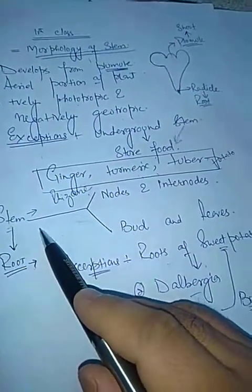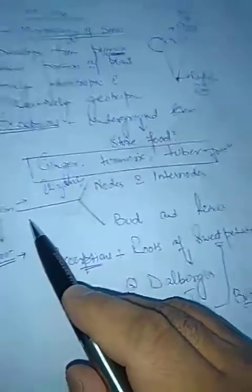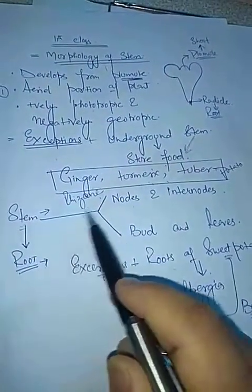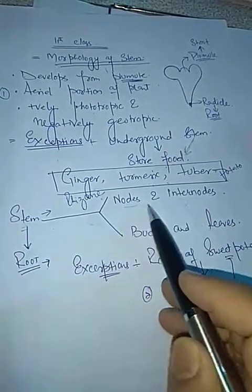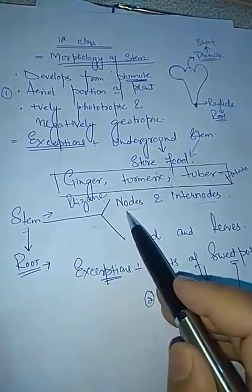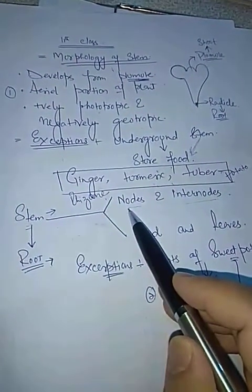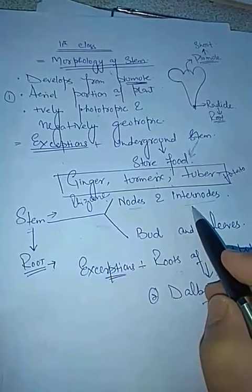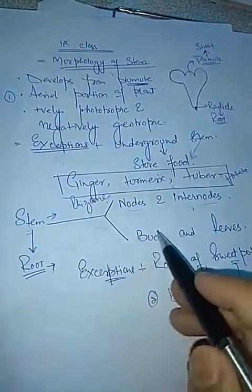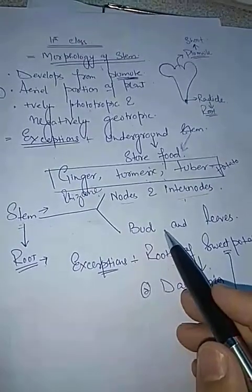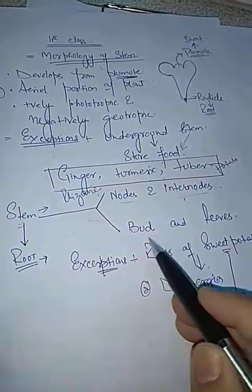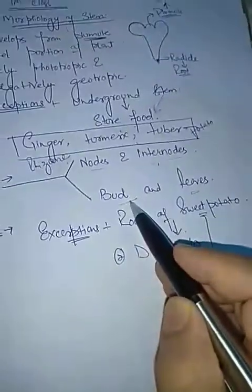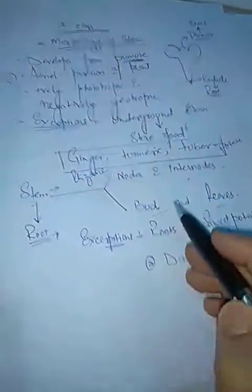As far as the stem is concerned, there are some diagnostic features that differentiate it from the root. The stem has nodes and internodes. The node is the point from which a leaf arises, and the distance between two nodes is called the internode. This is the second important diagnostic feature of the stem.